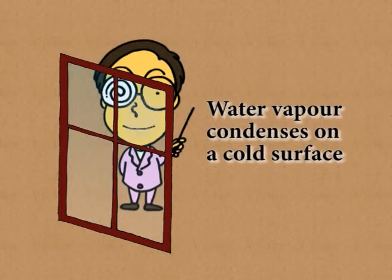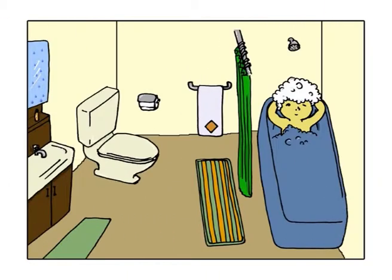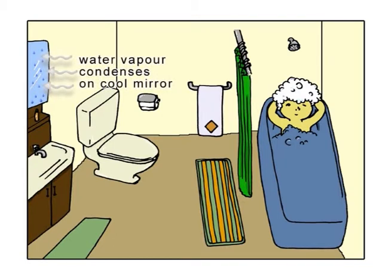We can't see water vapor, but we know it's there from the way it condenses when it hits a cold surface. That is why water droplets form on a mirror in a steamy bathroom.